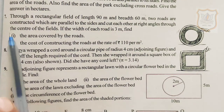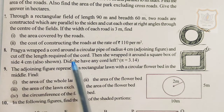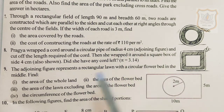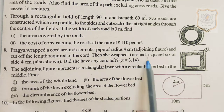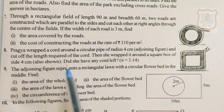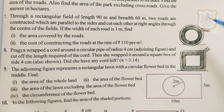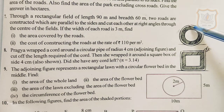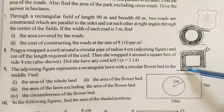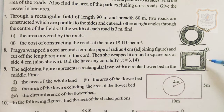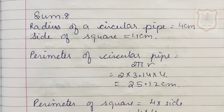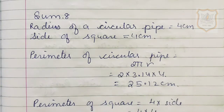Sum number 7 you have to do by yourself. We move to question number 8: Pragya wrapped a cord around a circular pipe of radius 4 cm, cut off the length required, then wrapped it around a square box of side 4 cm. Did she have any cord left? Take pi equals 3.14. Pragya wrapped the cord around a circular pipe and cut it. Now she wants to wrap the same cord on the square. We have to find out whether she has any cord left or not.